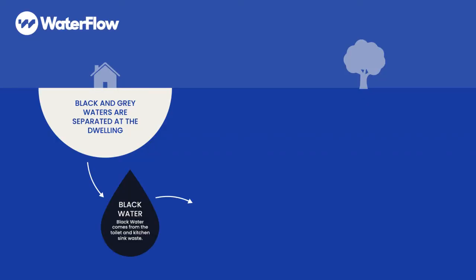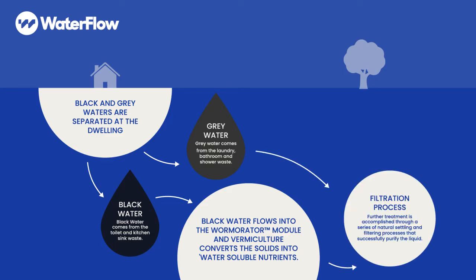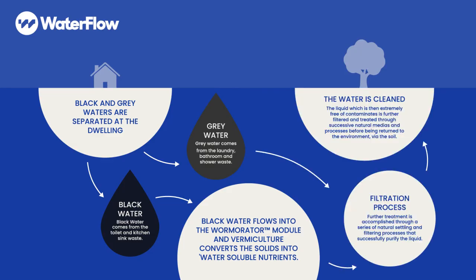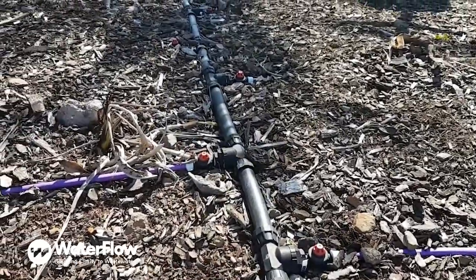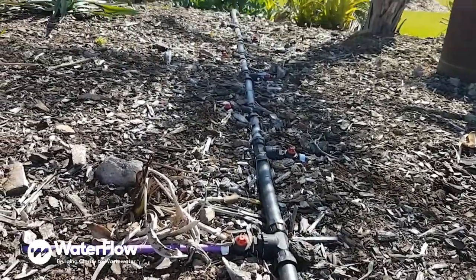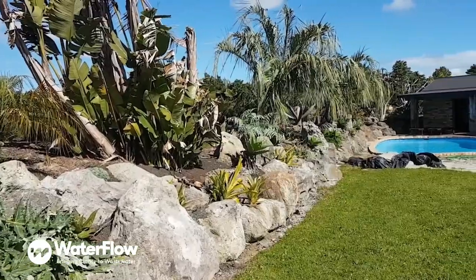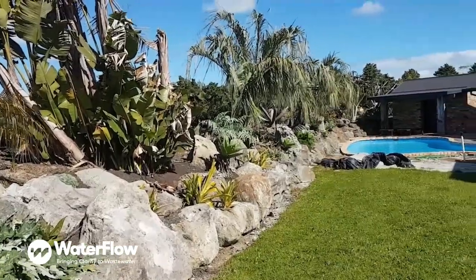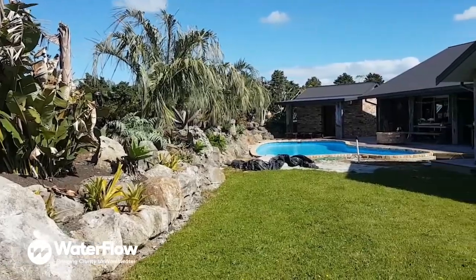After treatment, the black water is recombined with the grey water for final disposal into the soil. The treated effluent is discharged into the land application system disposal field that best suits your needs, whether it be drip lines, ETS beds, mounds, conventional trenches, or other designs.